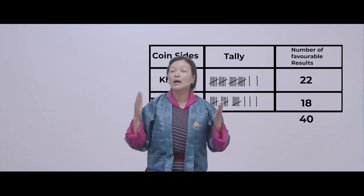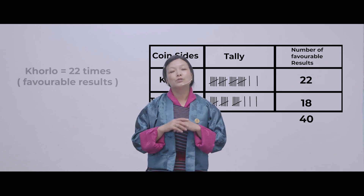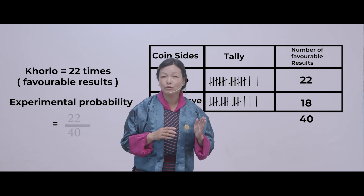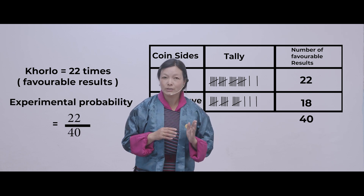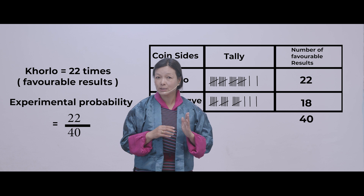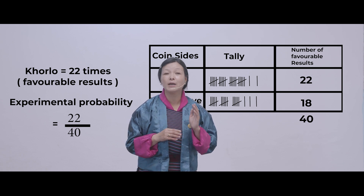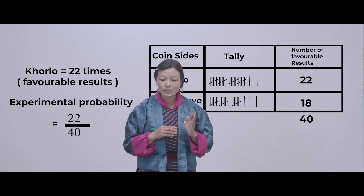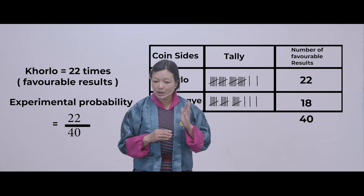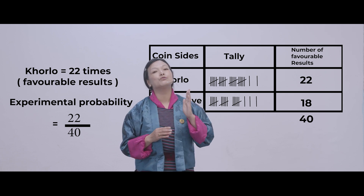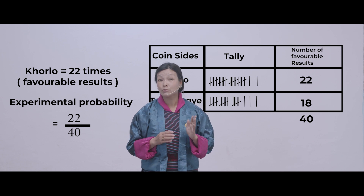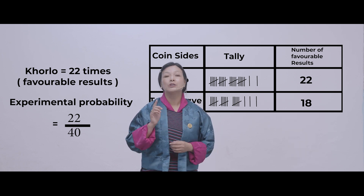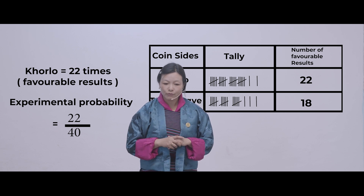What is the favorable outcome of khorlo? The favorable outcome of khorlo is 22 over 40. You might be thinking — why are we writing about khorlo only? Because the outcome or event we wanted to find out is about khorlo. So you write 22 over 40.